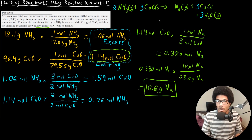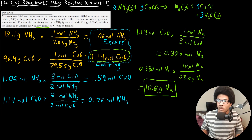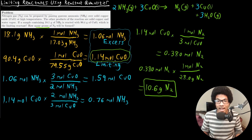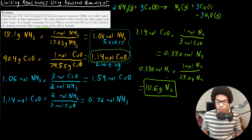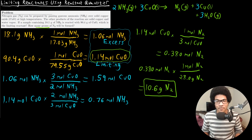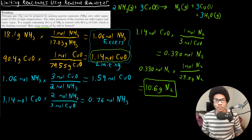To summarize what we went through: we were given a chemical process, wrote out and balanced the chemical equation, converted the given reactant masses to moles to determine which would run out first, identified our limiting reactant, and then used that limiting reactant to calculate the amount of product formed. The limiting reactant is so important — you have to figure out which one runs out first before you can determine how much of your final product will be formed.